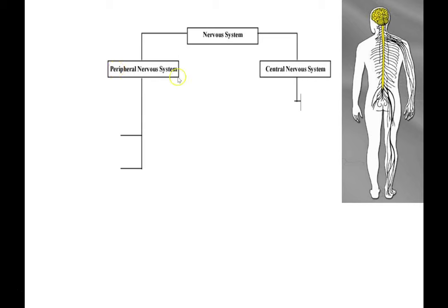The nervous system is divided up into two main parts: the peripheral nervous system and the central nervous system. The central nervous system is just the brain and the spinal cord, shown in yellow here — everything down in the center of the body. The peripheral nervous system is everything else — all the nerves and ganglia, all the neurons and glia outside the brain and spinal cord.